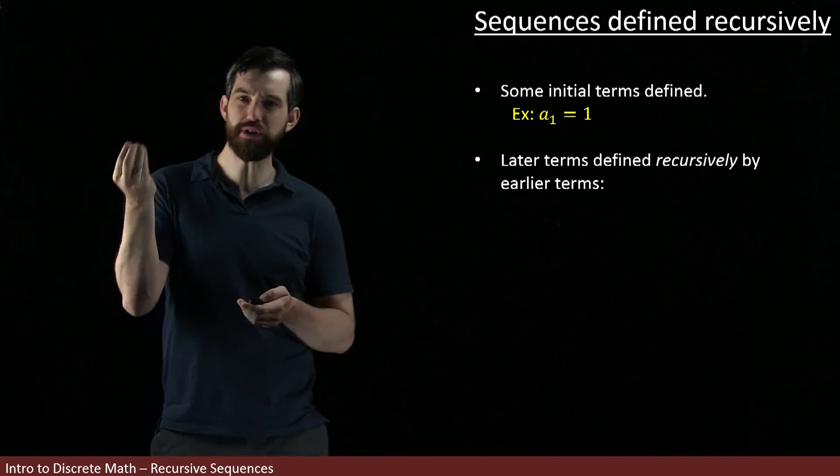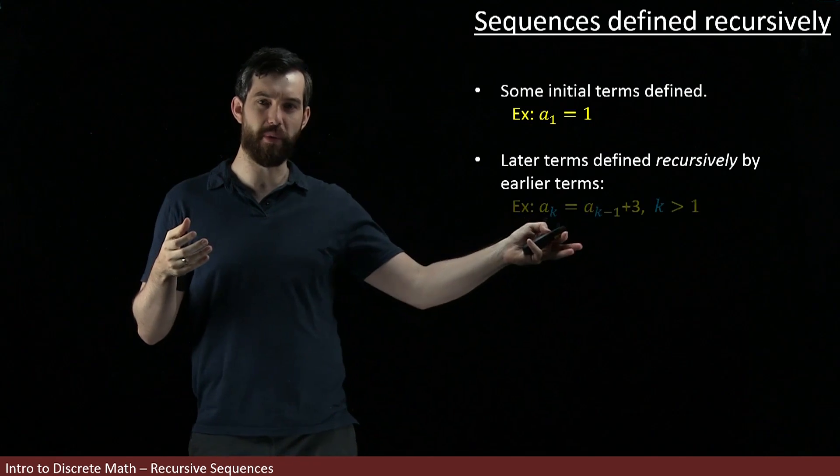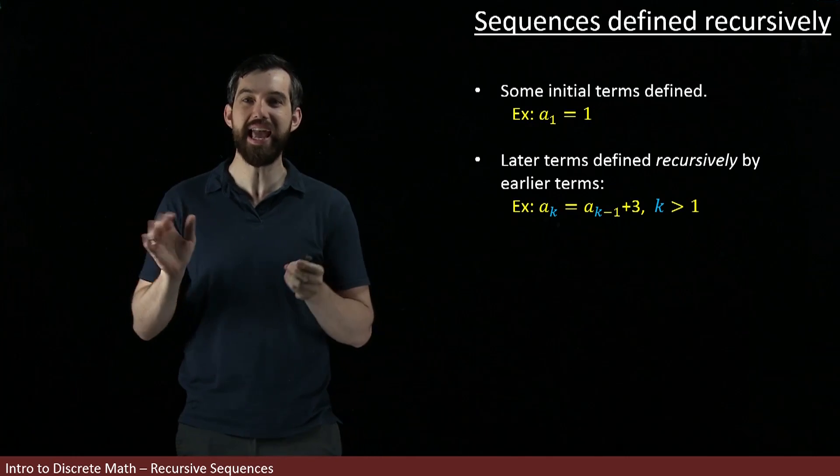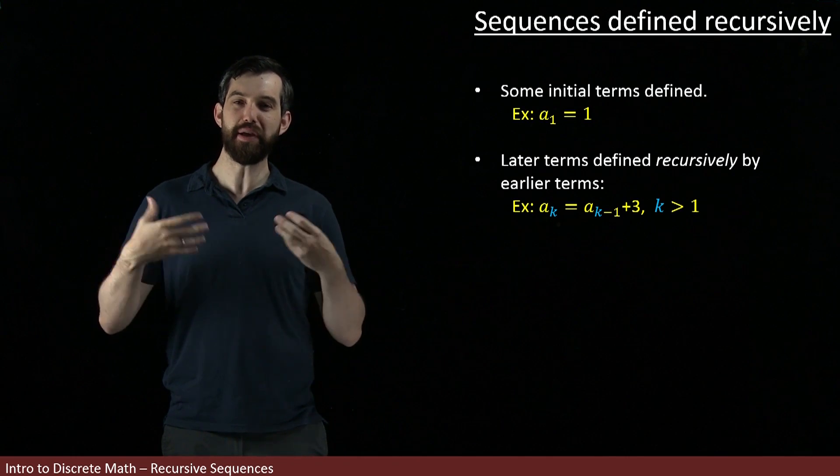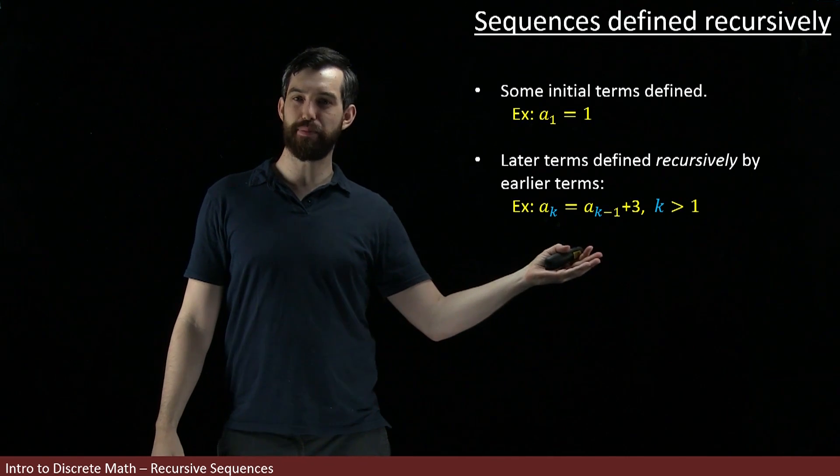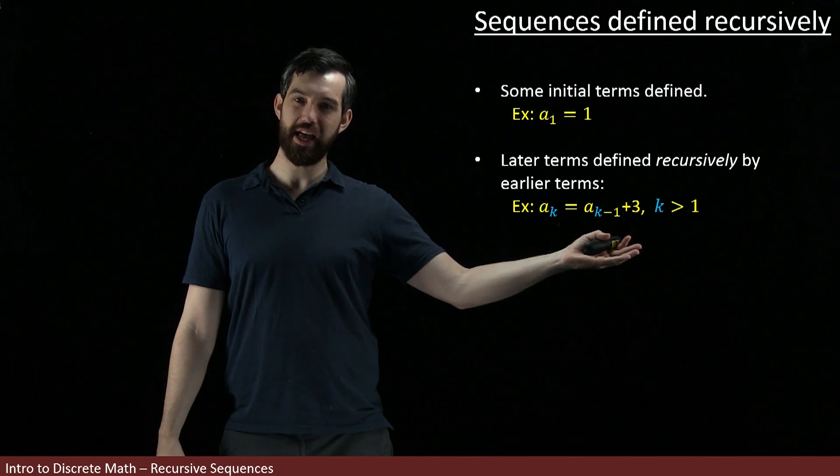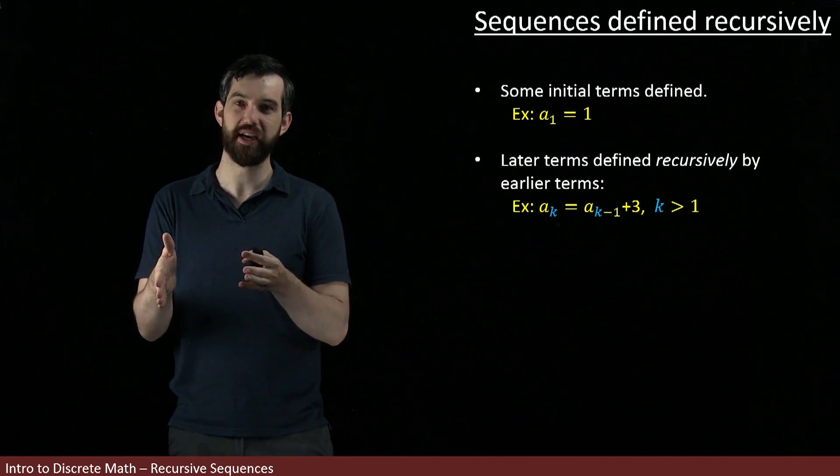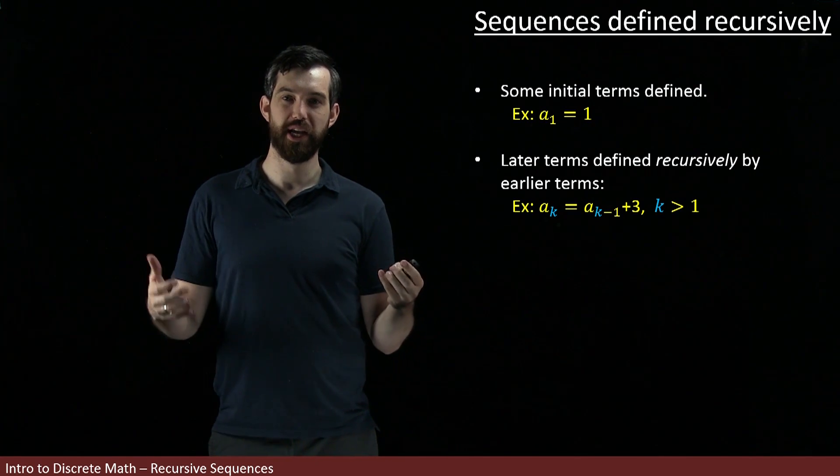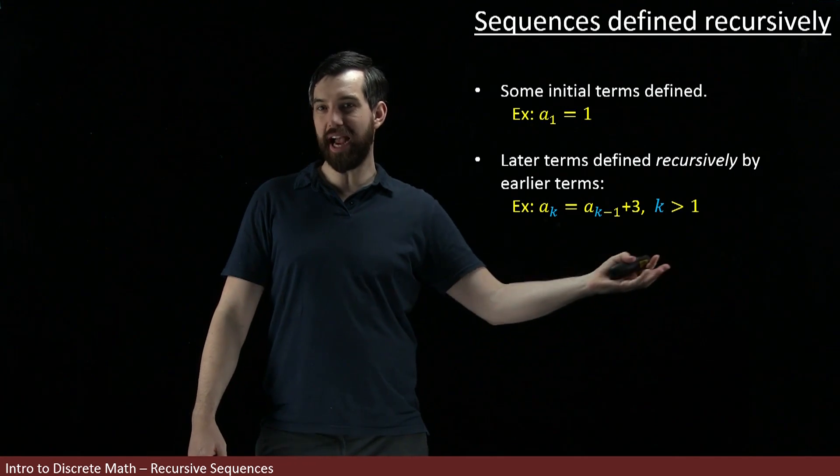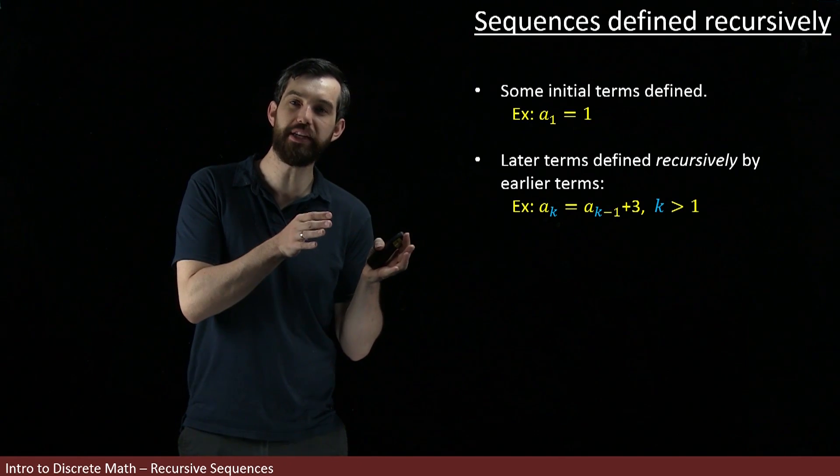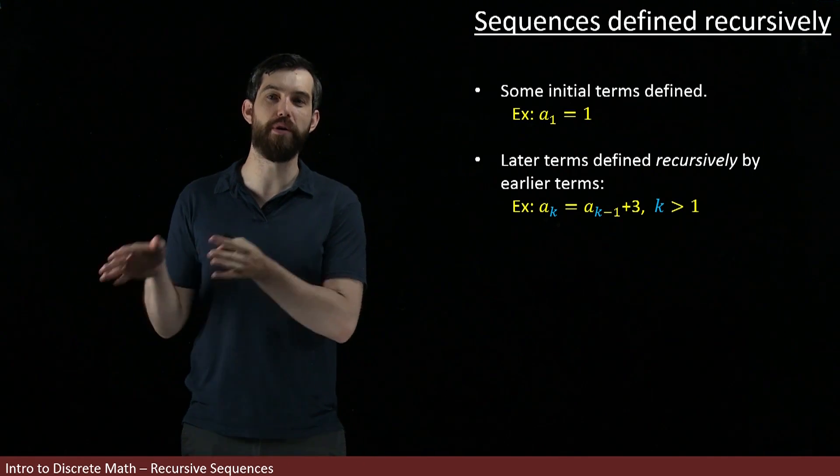What I mean by this is that there is some recursive formula like the following. We're going to say that the kth term in the sequence, Ak, is some formula in terms of prior terms. In this example, it's Ak-1, the term that immediately precedes it, and then you add 3 to it. But in principle, on the right-hand side here, you could have any formula that was referencing only terms before the kth term.